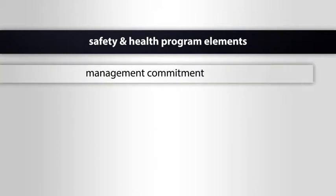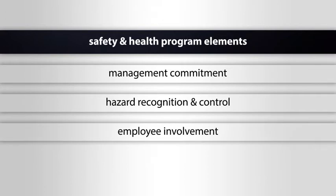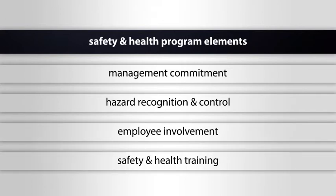Let's review the safety and health program elements - what I consider the four fundamentals of having an effective safety and health program. Number one is management commitment. Management establishes the overall tone of any facility. Number two is hazard recognition and control. Number three is employee involvement, and number four is safety and health training.